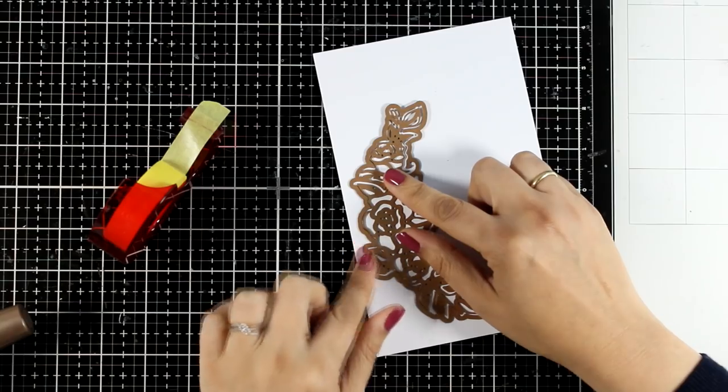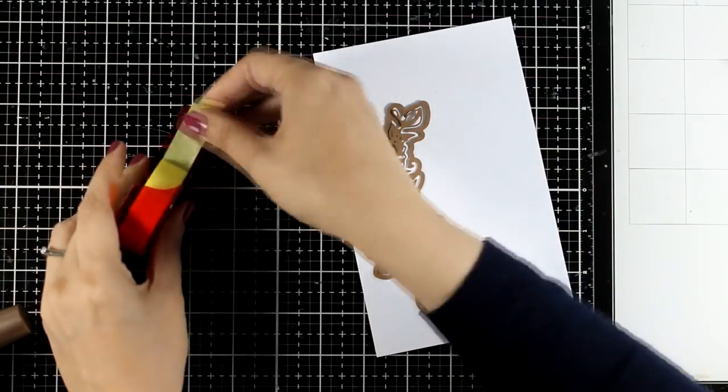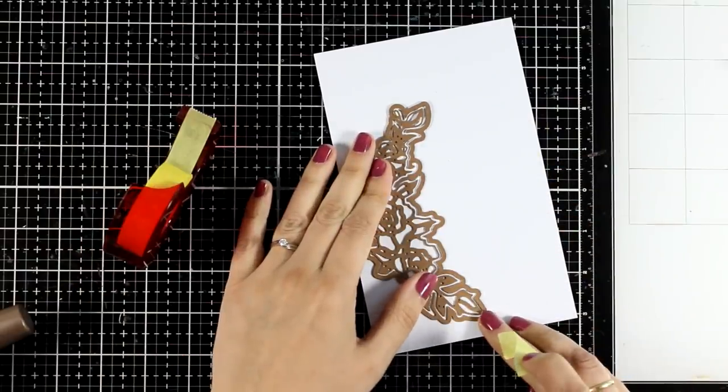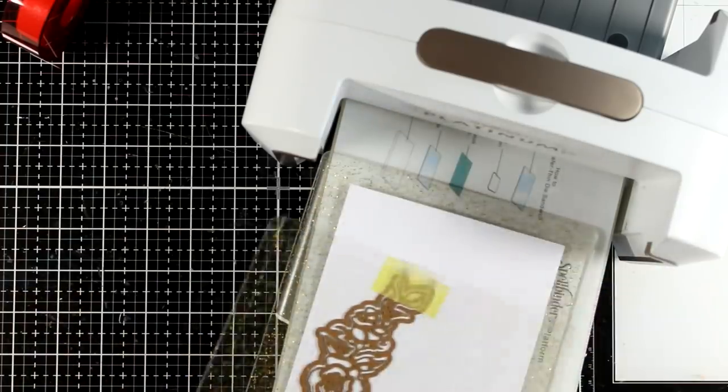So for the first technique to get this stained glass look all you do is to color all the different parts with your favorite medium. In my case I'm going to use my alcohol markers. So first of all let's do the die cutting.